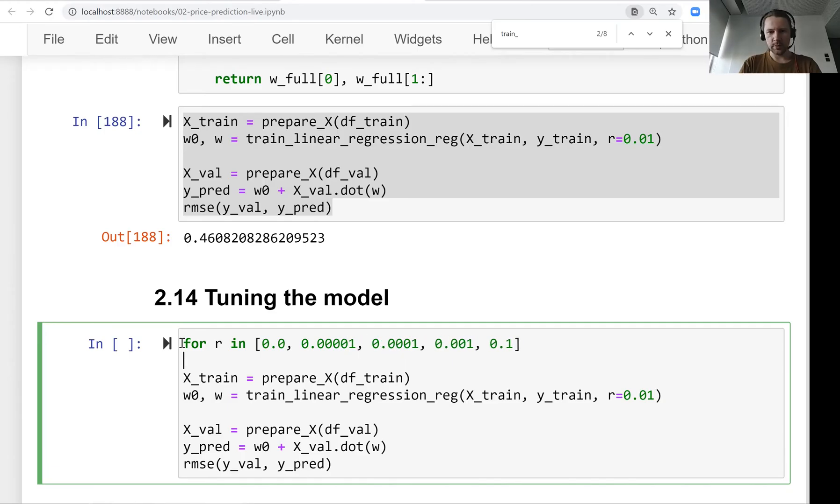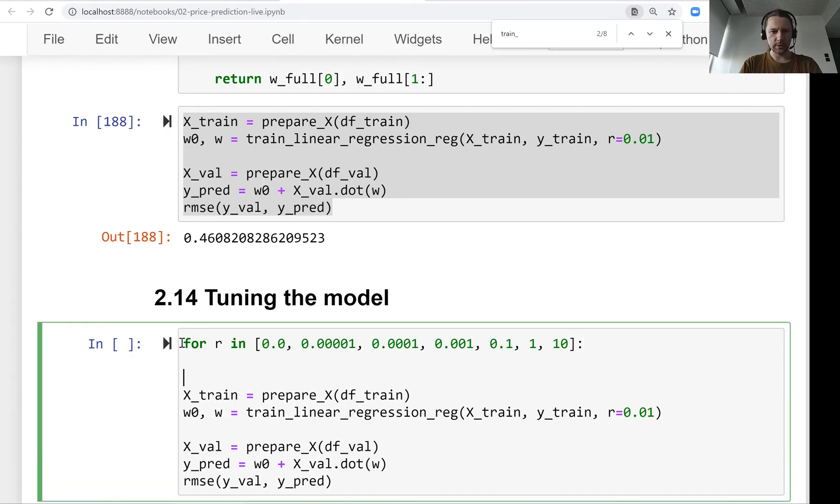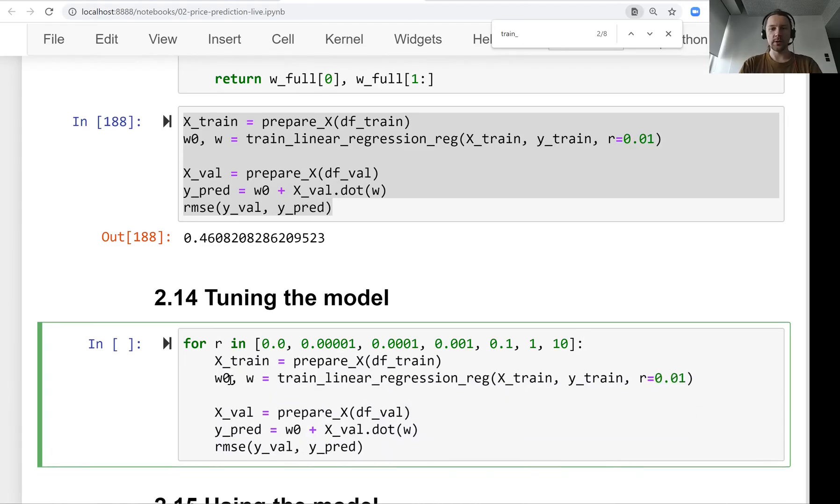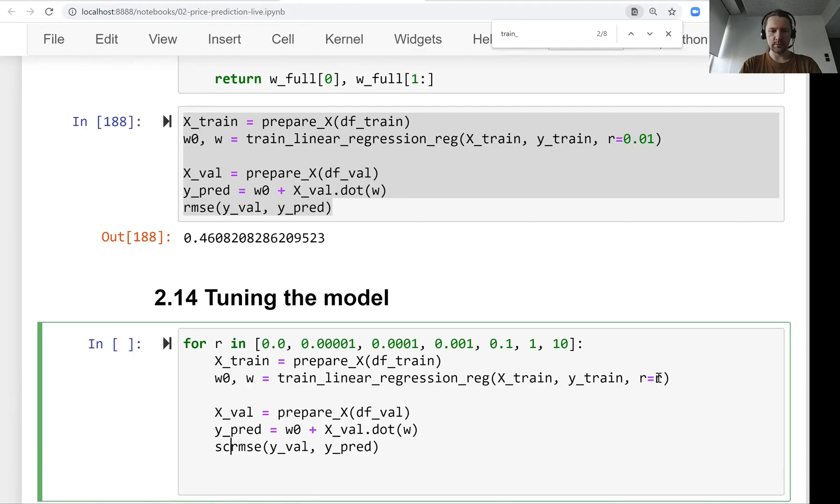So what we do now is we just go through this r and we try it for every r from this list. We apply it to our model and we see what happens. Now we just need to print the results.